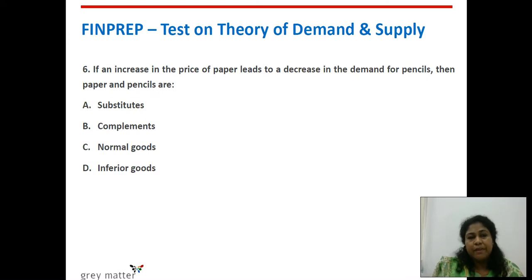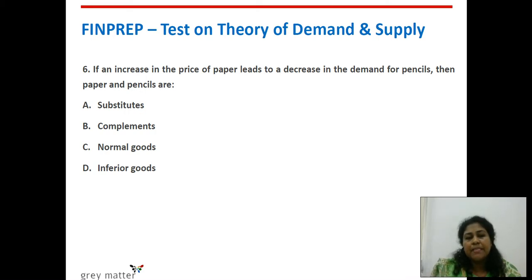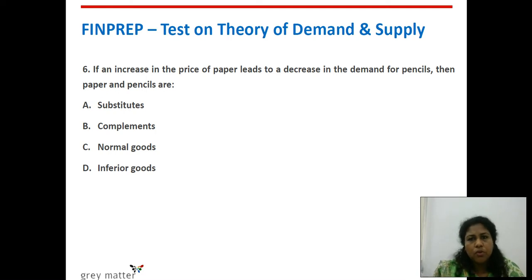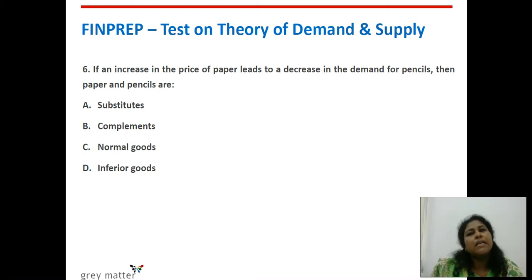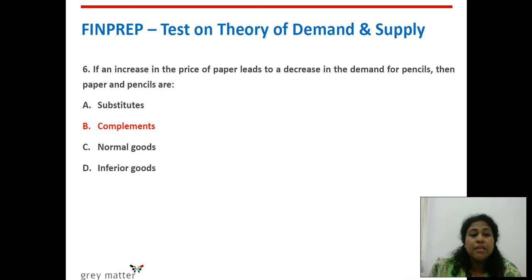Sixth question: if an increase in the price of paper leads to a decrease in the demand for pencils, then paper and pencils are what? Paper prices have increased, so you will buy less paper; if you have less paper, you will demand fewer pencils. Paper and pencils are demanded together — they are complements. They are bought together and used together, so they are complements.